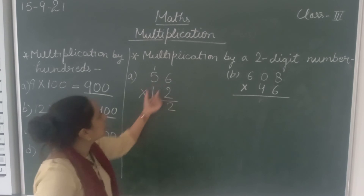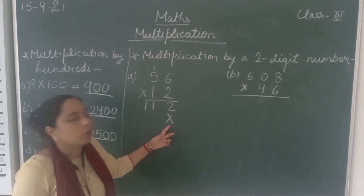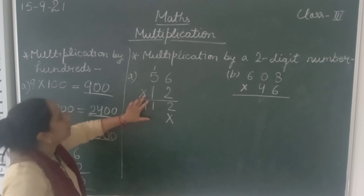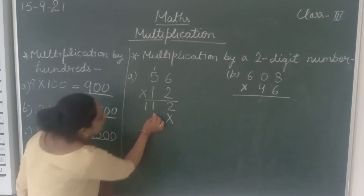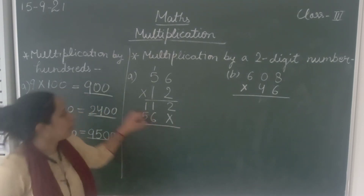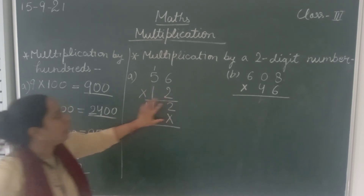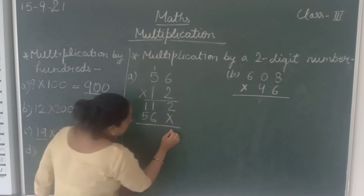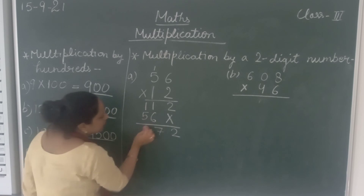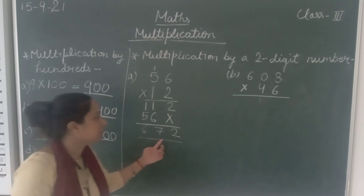Now we will multiply 56 by 1, the tens digit. Before that, you have to make a cross sign below the 2. So 1 six is 6 and 1 five is 5. Now we are going to add these two numbers together. 2 plus cross is 2, 1 plus 6 is 7, and 1 plus 5 is 6. So the product of 56 × 12 is 672.